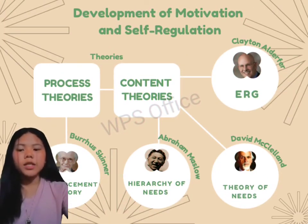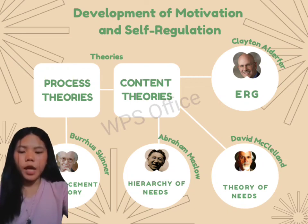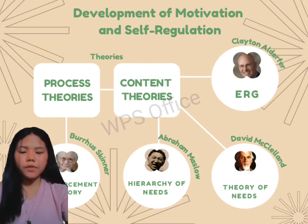So that was the theories of development of motivation and self-regulation. Content theory is the subset of motivational theories that tries to define what motivates people. Process theory is a system of ideas that explains how an entity changes and evolves. The hierarchy of needs describes human behavior in terms of basic needs for survival and growth. The ERG theory addresses individual needs at a particular need level, and once that need is satisfied, it shapes behavior by controlling the consequences of the behavior.